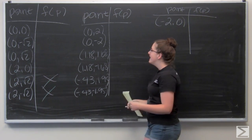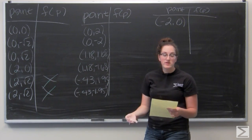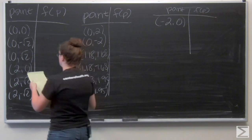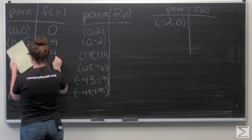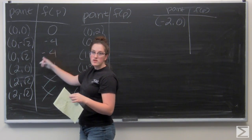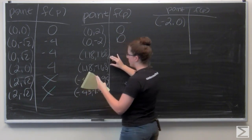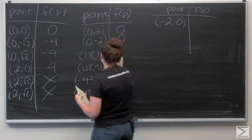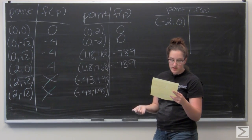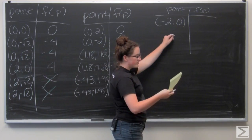Now I find the function values by plugging all x and y components into f(x, y). At (0, 0): f = 0. At (0, ±√2): f = -4. At (2, 0): f = 4. At (2, ±√2) — already excluded. At (1.18, ±1.68): f ≈ -0.789. At (-0.43, ±1.95): f ≈ -0.132. At (-2, 0): f = 20.